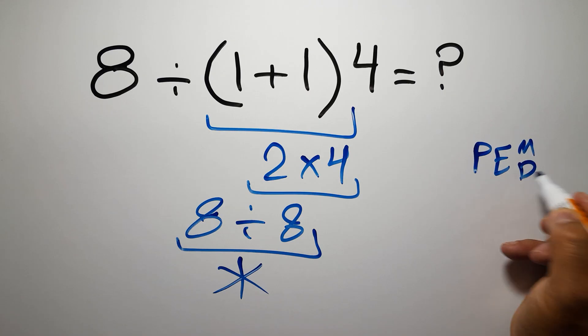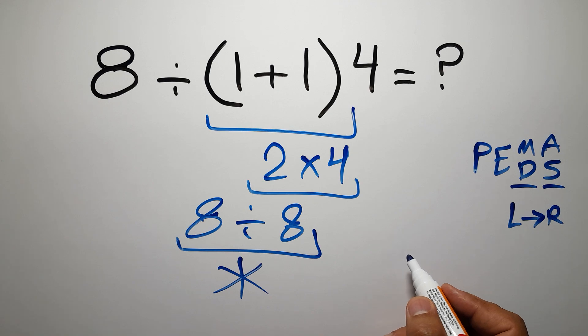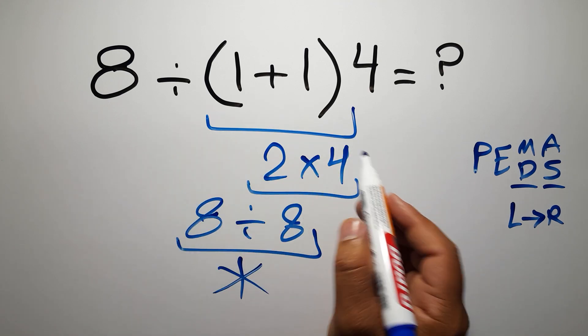Exponents, then multiplication or division, and the final addition or subtraction. Remember that multiplication and division have equal priority, and we have to work from left to right. The same applies to addition and subtraction.